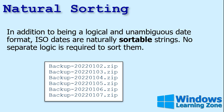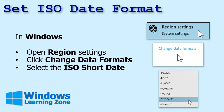If you go month-day-year, or even day-month-year, you can't naturally sort that. So how do you set the ISO date format? It's in your Windows settings under the regional settings. In Windows 10 — and I'm pretty sure in 7 and 8 — you go to regional settings, change data formats, and then go to ISO short date. Just go to your Start button, type in 'region' — R-E-G-I-O-N — and click on region settings. Come down to 'change data formats.'